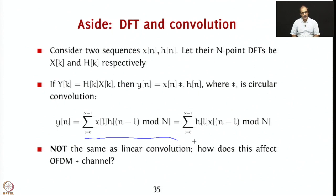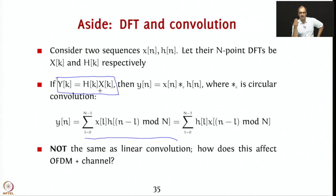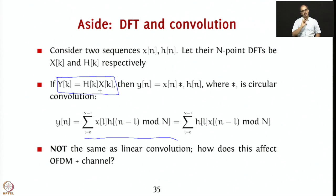Now let us go to our picture of OFDM. In the OFDM case, we take the IDFT, then the signal undergoes convolution with a channel. The problem is that if we want to exploit the property of single-tap equalization, we want Y[K] = X[K]·H[K]. But nature performs linear convolution, not circular convolution. So what can we do? The way to do it is to fake circular convolution by including what is called a cyclic prefix.